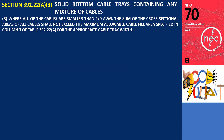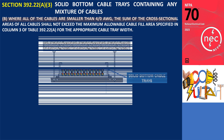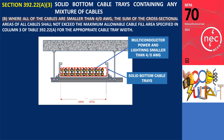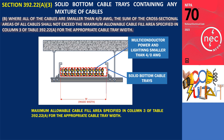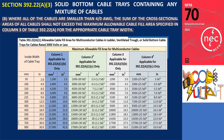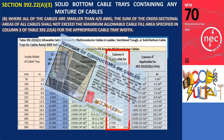Section 392.22(A)(3)(b) applies where all of the cables are smaller than 4-aught AWG. The sum of the cross-sectional areas of all cables shall not exceed the maximum allowable cable fill area specified in Column 3 of Table 392.22(A) for the appropriate cable tray width. This table provides the maximum allowable cable fill area for multi-conductor cables rated 2,000 volts or less installed in ladder, ventilated trough, or solid-bottom cable trays — which I have already discussed in my previous video.